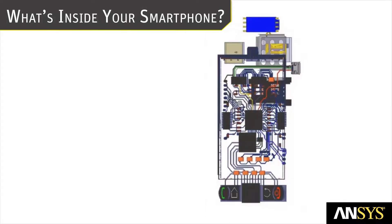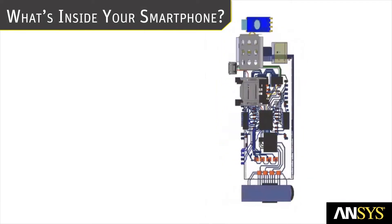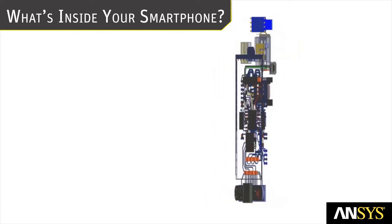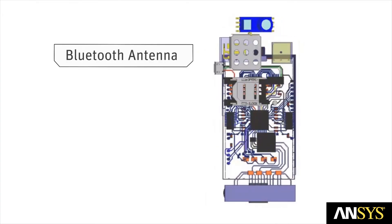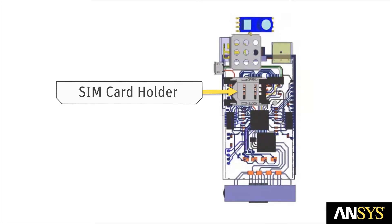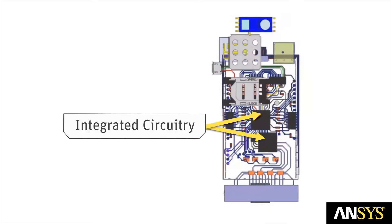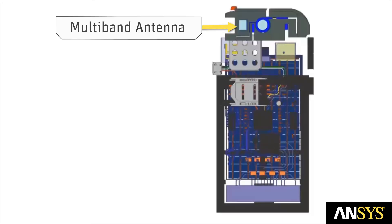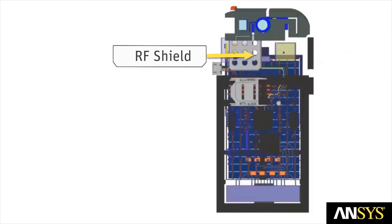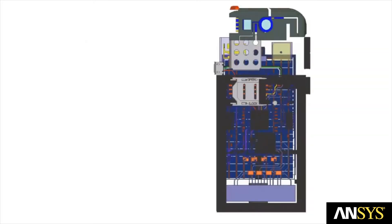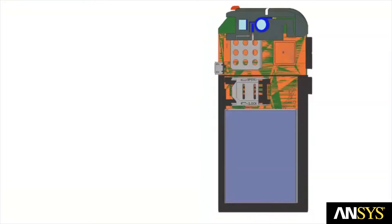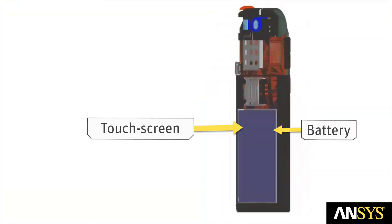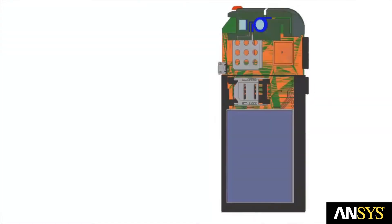Let's look inside a smartphone and see where ANSYS electromagnetic tools can become important and useful. Here we see a Bluetooth antenna, a USB connector, a SIM card holder, integrated circuitry, and we see even more antennas: the multi-band antenna, our GPS antenna, RF shielding and, of course, our human interface — our touch panel, our batteries and all of our other circuitry.